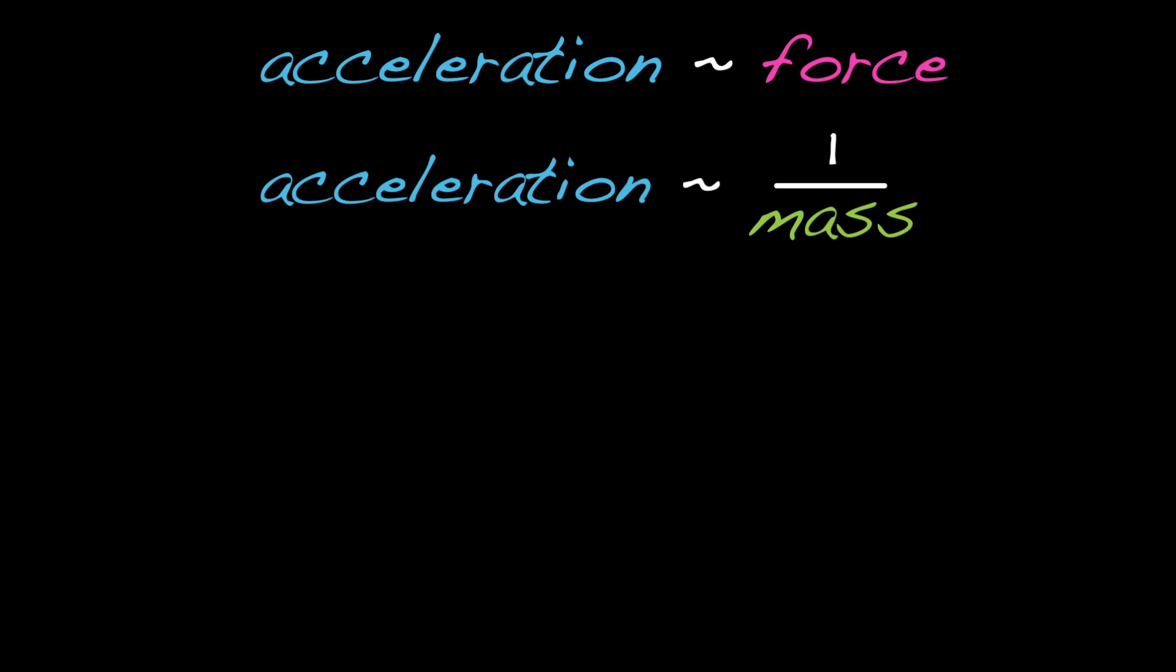Putting these together, we see that acceleration depends on the magnitude of net force, which is proportional to acceleration, and the mass of the object, which is inversely proportional to acceleration. This gives us a is proportional to f divided by m. Multiplying both sides by m gives m times a is proportional to f. And if we flip this, we get f is proportional to m times a.